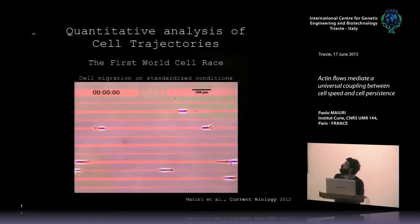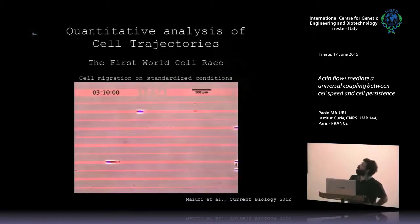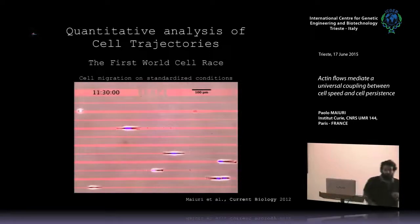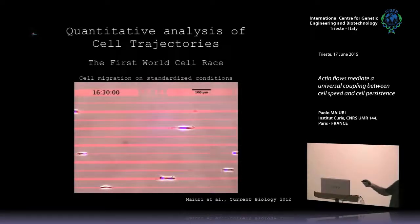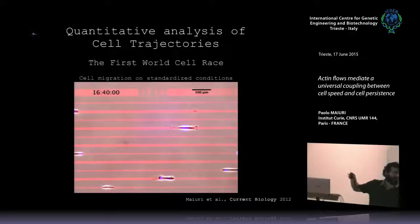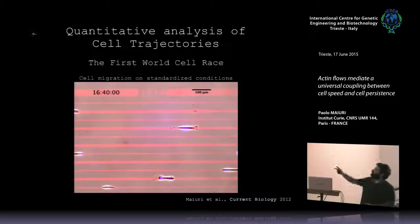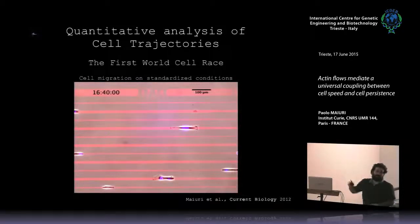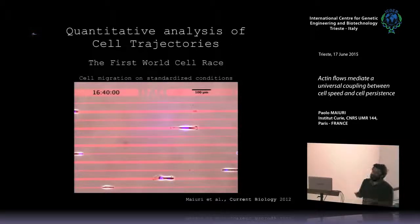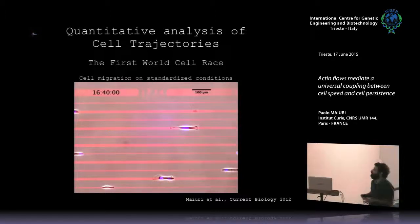I started working on cell migration by analyzing the data of the first world cell race, which was a scientific event where we used standardized conditions. This kind of line that you can see here in the movie — we put the cell on this fibronectin-treated line and analyzed their migration. That is a trick that simplifies cell migration a lot, because you can reduce the 2D migration to a 1D problem, which simplifies a lot the way to look at it.